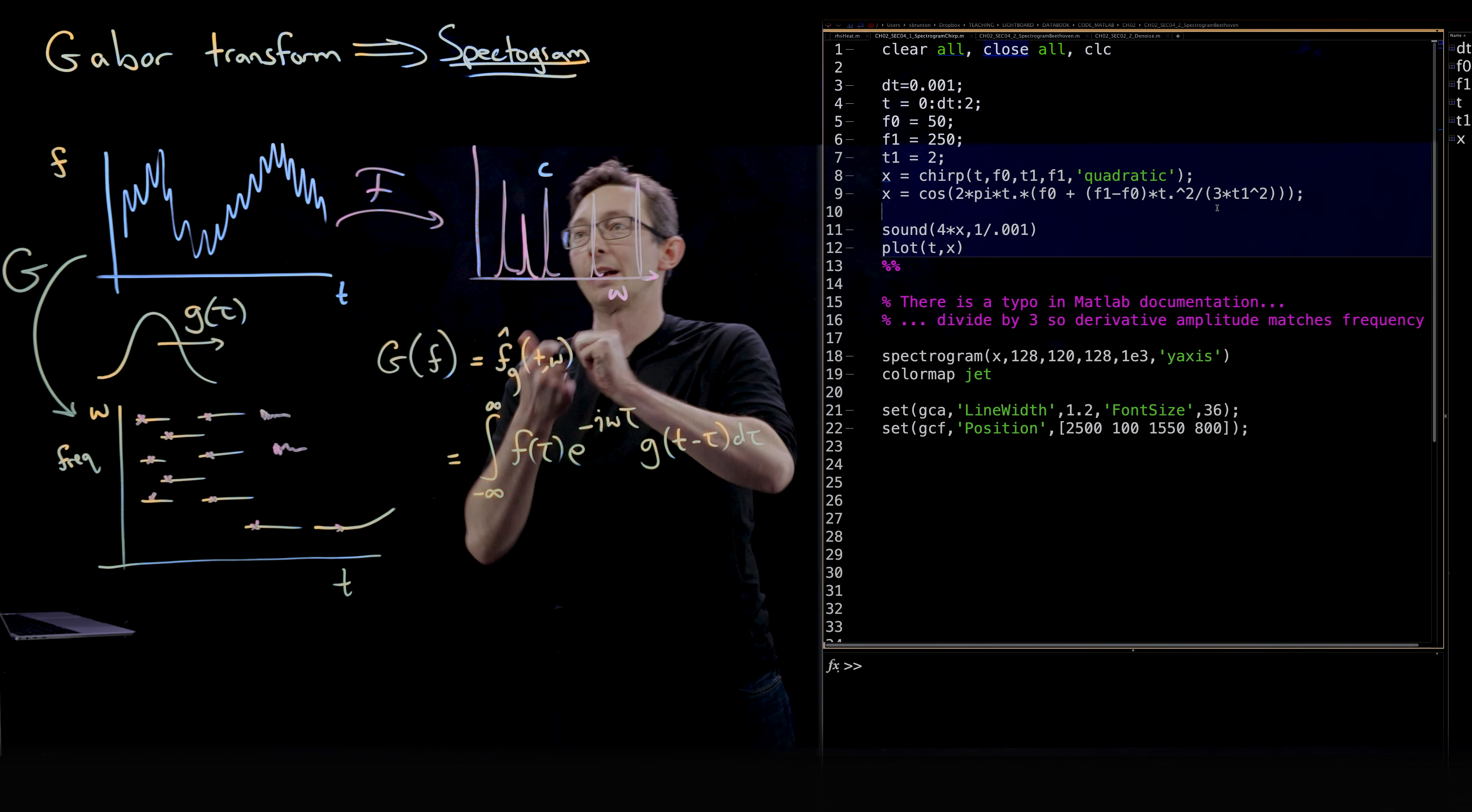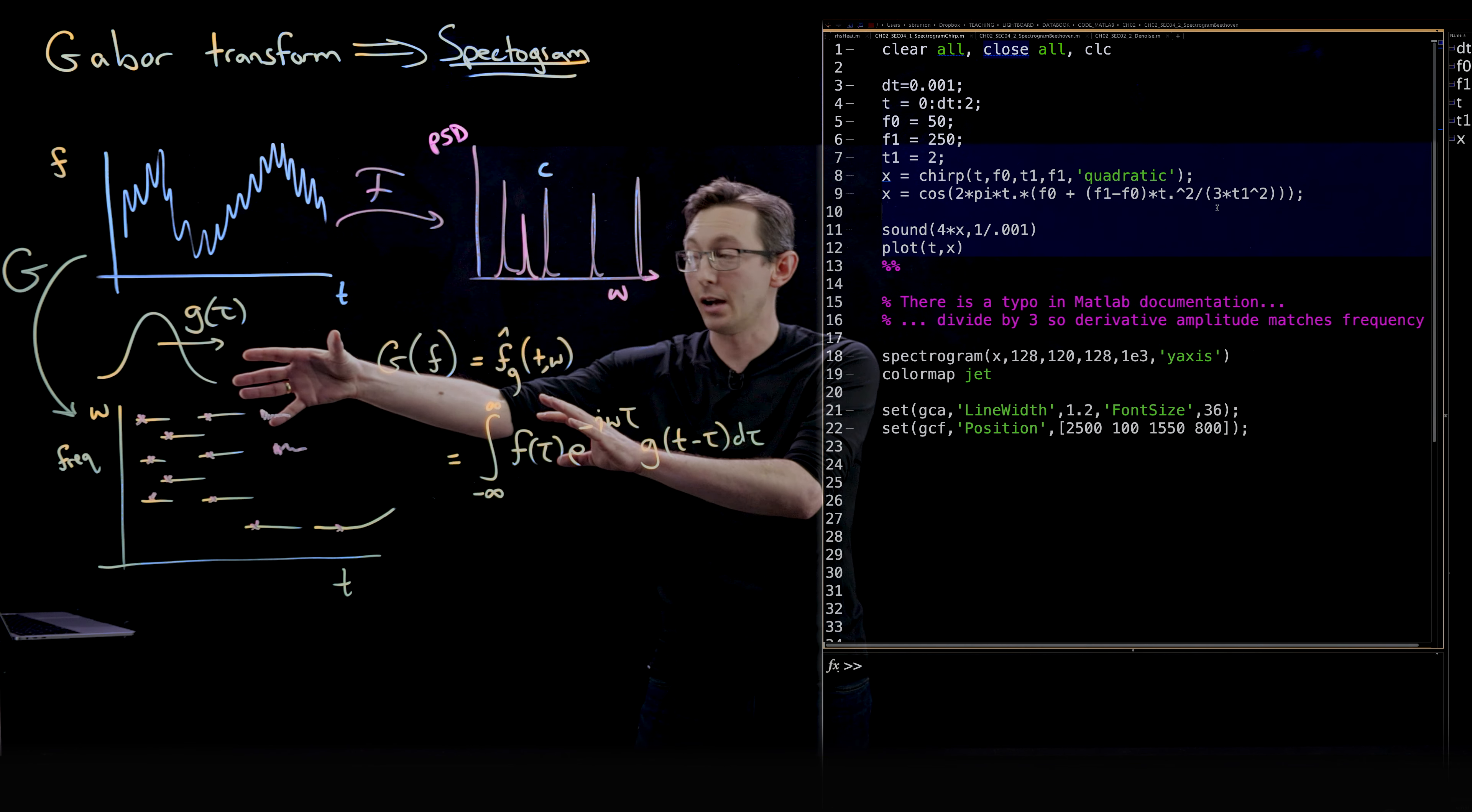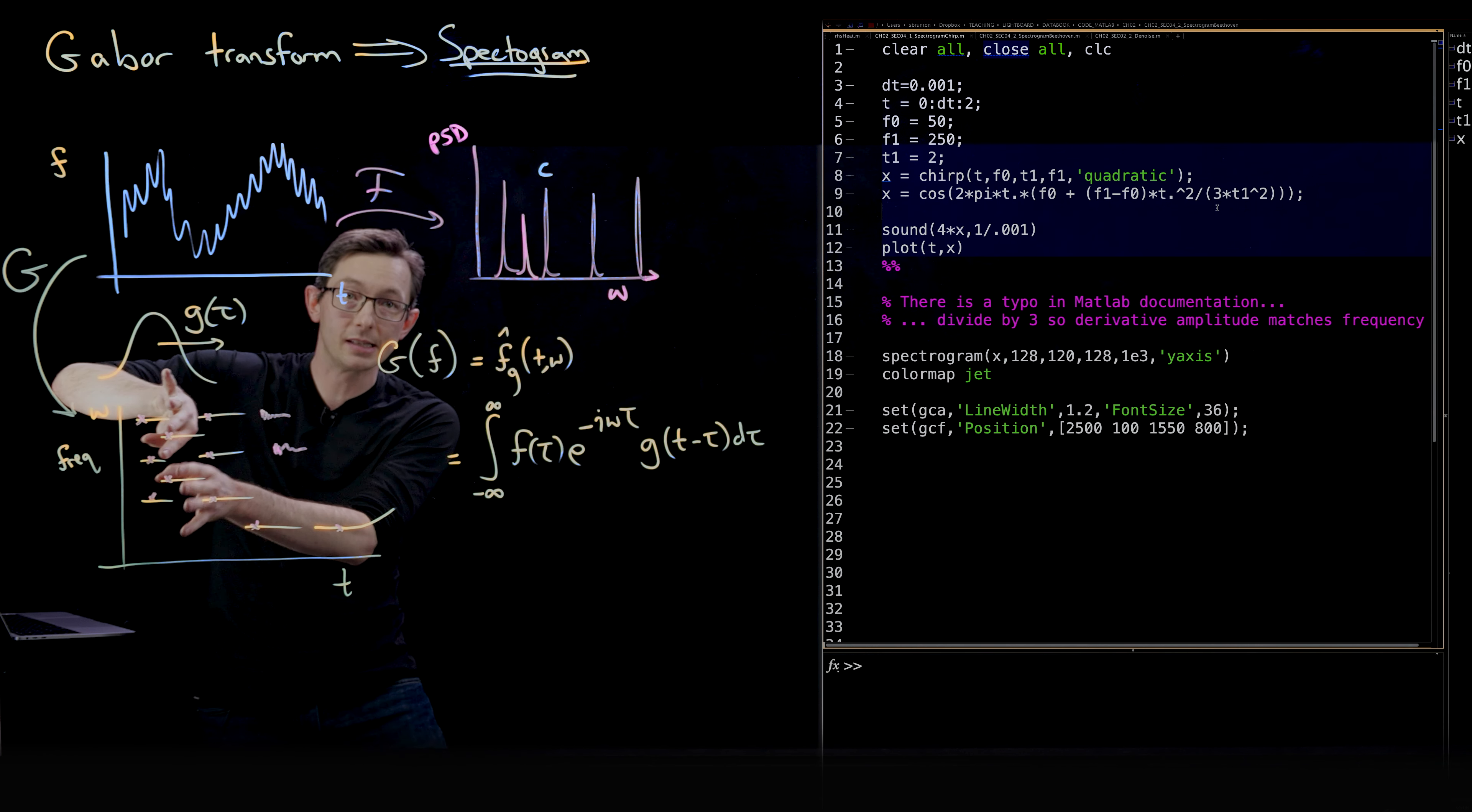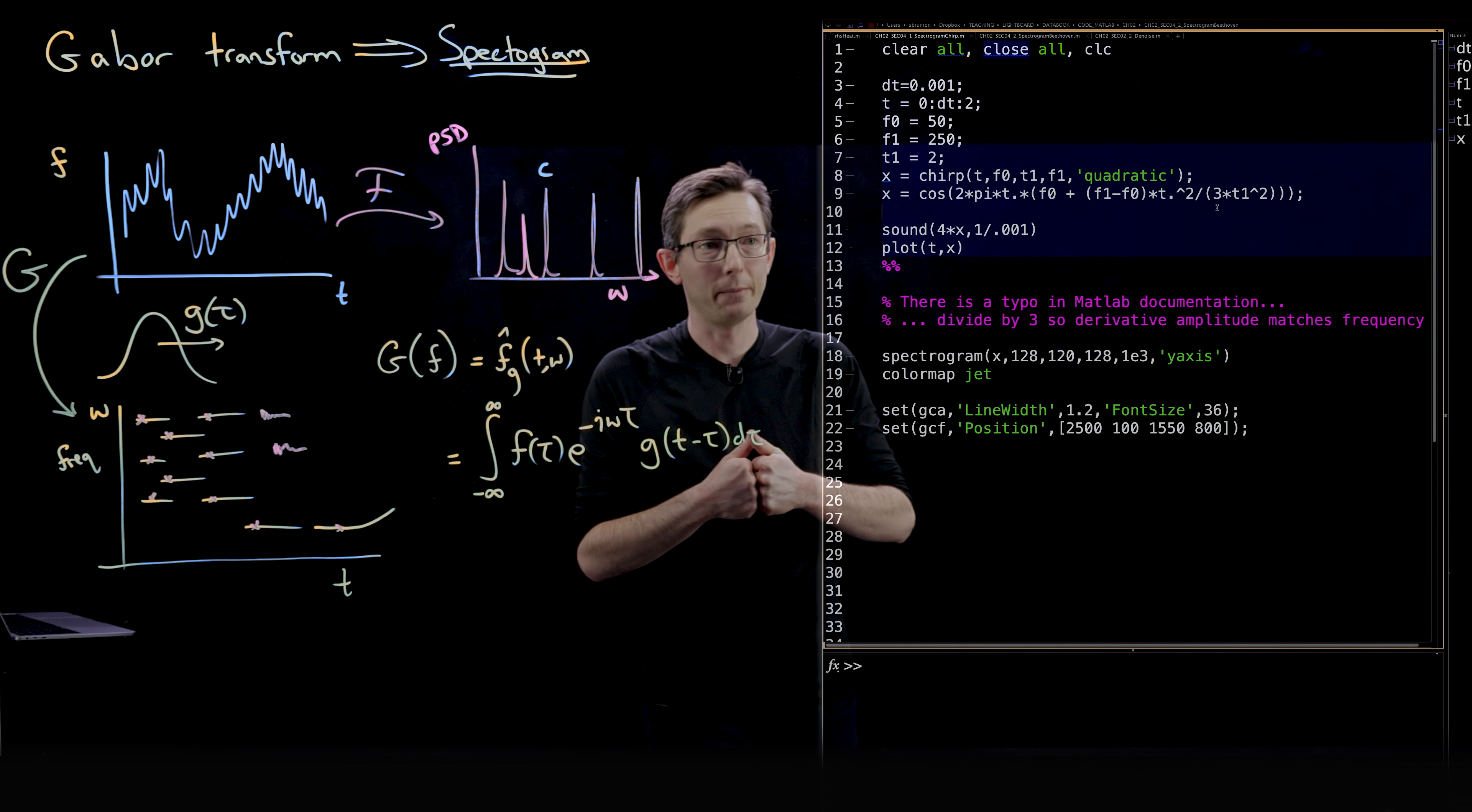If this was a power spectral density as a function of frequency, the Gabor transform, in contrast, by computing a windowed Fourier transform as that window shifts in time, you can see how the frequencies evolve in time. Here I'm going to code this up in MATLAB for a couple of examples and show you how easy it is to play around with the spectrogram.